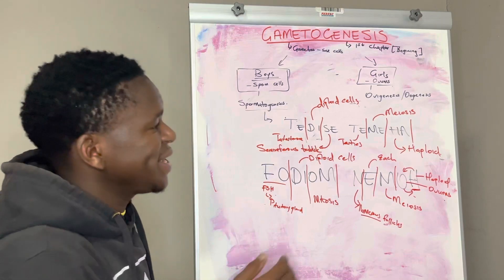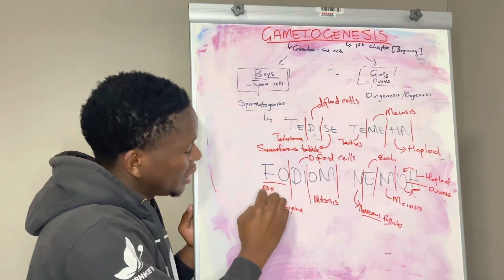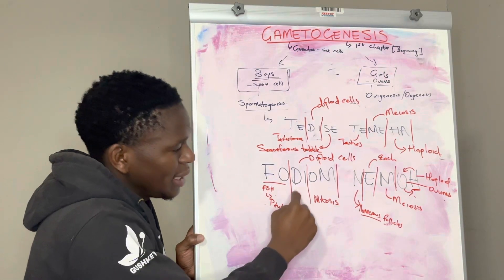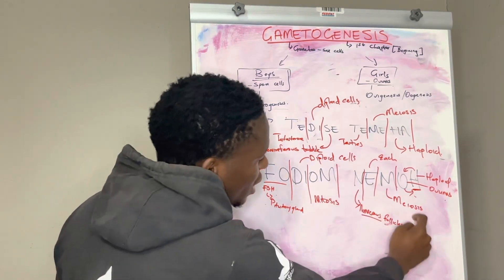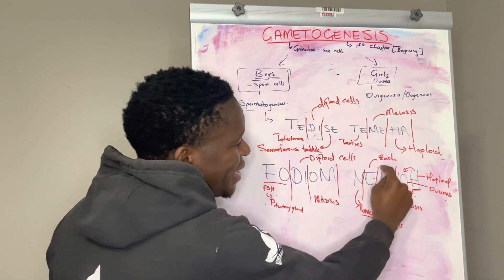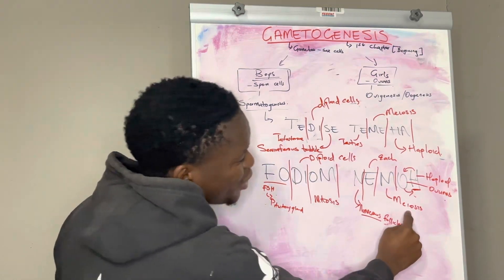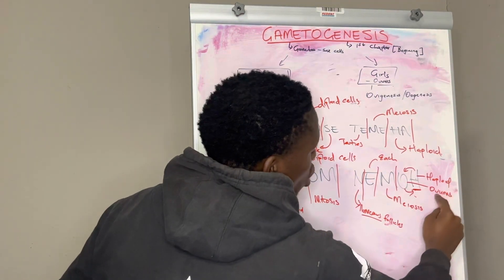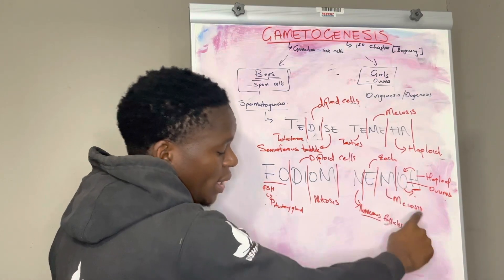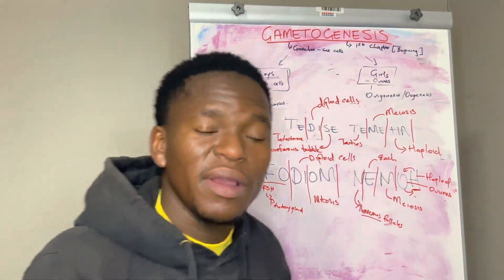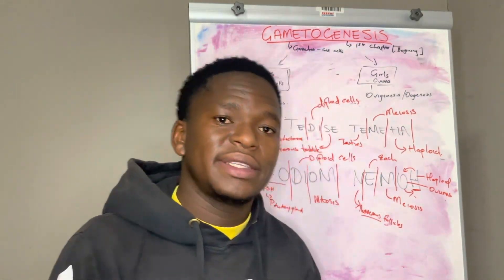For ovigenesis or oogenesis: under the influence of follicle stimulating hormone secreted by the pituitary gland, the diploid cells will undergo mitosis to form numerous follicles, and out of these numerous follicles each follicle will undergo meiosis to produce haploid ovums. Each ovum is the one which will mature and be ready to get fertilized.